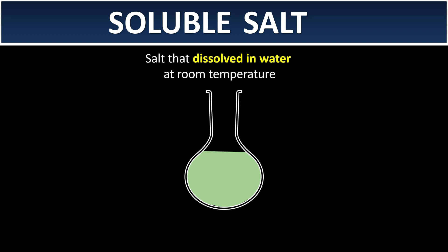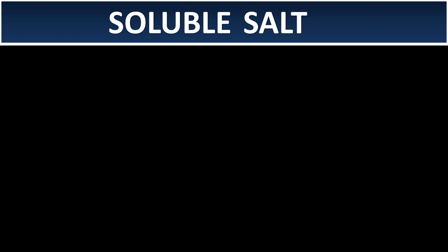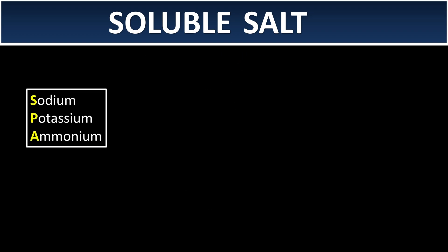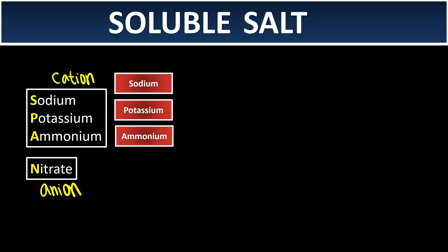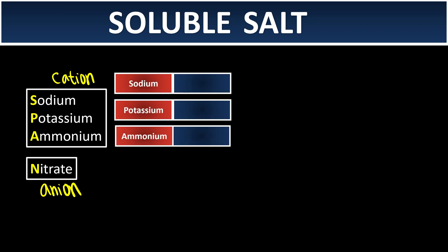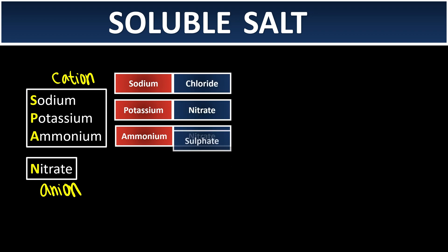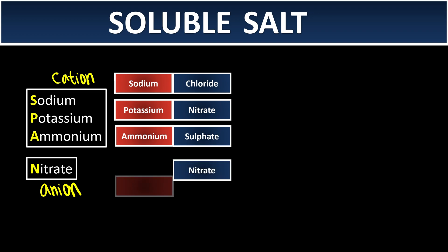There are rules to memorize. If you see sodium ion, potassium ion, or ammonium ion as the cation of the salt, or if you see nitrate as the anion, they are going to be soluble no matter what. So if the front of the salt name is sodium, potassium, or ammonium — no matter what is at the back — it's soluble. Or if you see nitrate at the back, no matter what's in front, it's soluble.